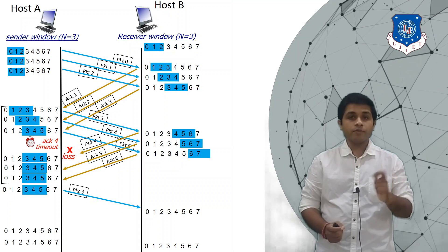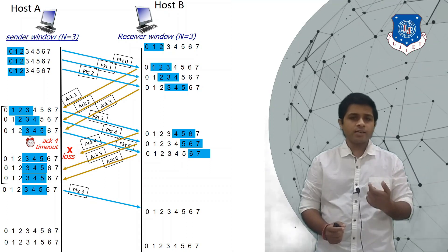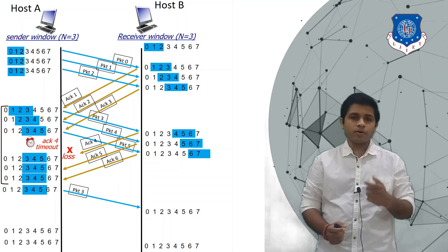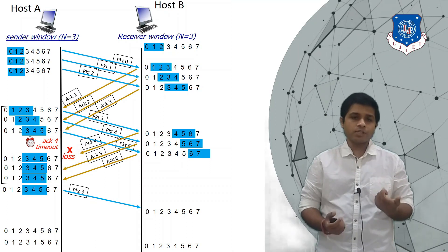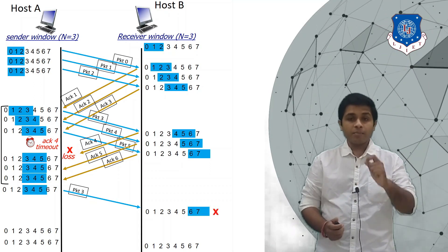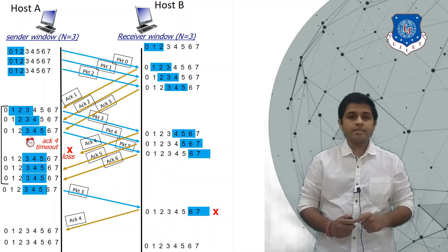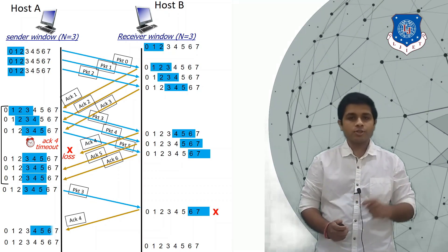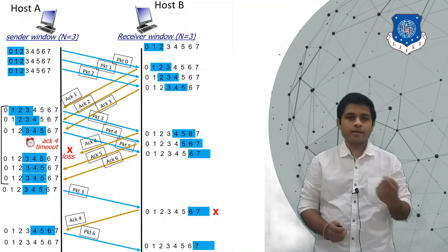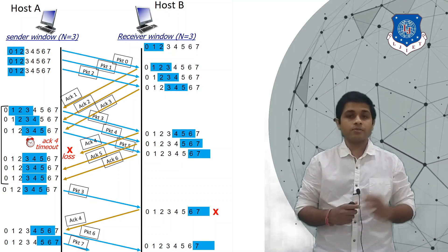The receiver is now expecting packets 6 and 7, but it is receiving packet 3. When the receiver gets packet 3, it realizes this packet was already received and thinks there must be some problem — A must not have received the acknowledgement. So B will discard that duplicate packet but will also send ACK 4 again. As A receives ACK 4, the window will slide and A will send the next packet, packet 6. B receives packet 6, the window slides, and A sends packet 7. This is how Selective Repeat works when the acknowledgement is lost.